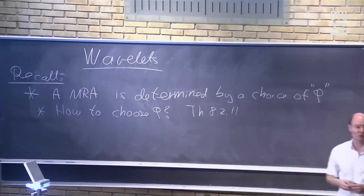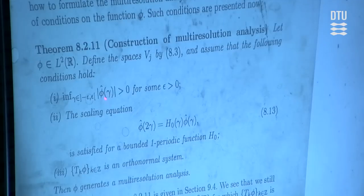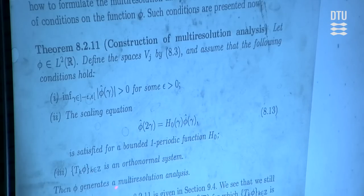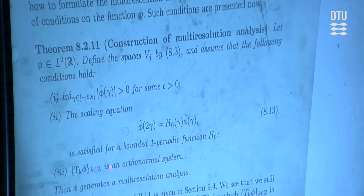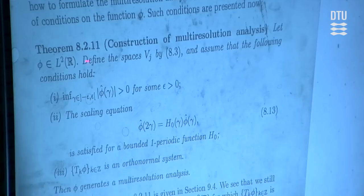In order to construct a multiresolution analysis, we have to find this special function phi. We take phi such that its Fourier transform in absolute value is positive in a small neighborhood around zero. The second condition is the scaling equation: the Fourier transform at two gamma equals some one-periodic function times the Fourier transform at gamma. The third condition is that the translates of phi form an orthonormal system — this is condition five in the definition of multiresolution analysis, the only one that survives in this theorem. Conditions one, two, three, and four are replaced by conditions one and two.